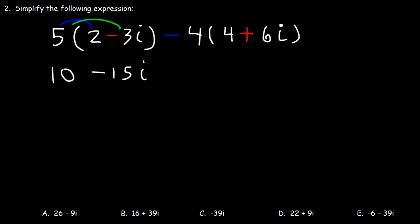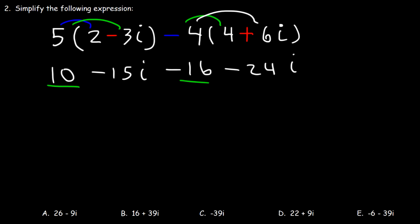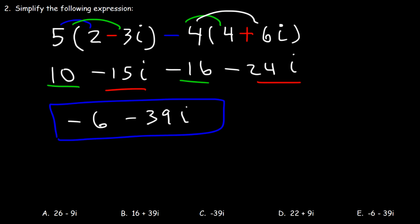Now let's distribute negative 4. Negative 4 times 4 is negative 16, and negative 4 times 6i is negative 24i. Now let's combine like terms. 10 minus 16 is negative 6, and negative 15i minus 24i, that's negative 39i. So answer choice E is the right answer.